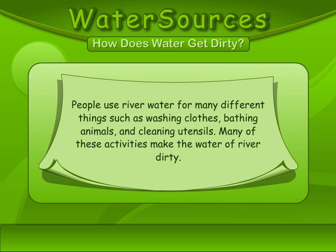How does water get dirty? People use river water for many different things such as washing clothes, bathing animals, and cleaning utensils. Many of these activities make the water of the river dirty.